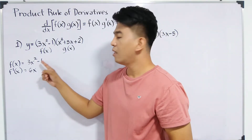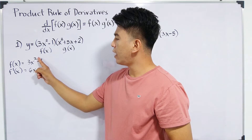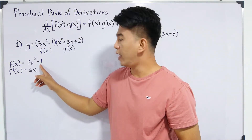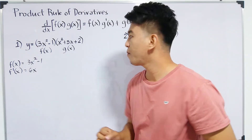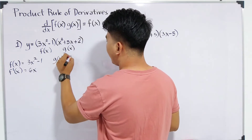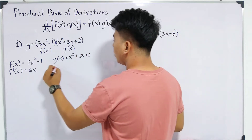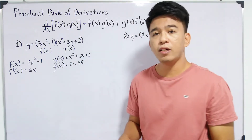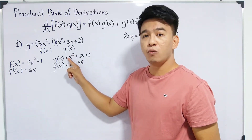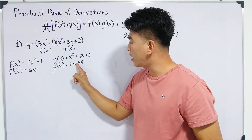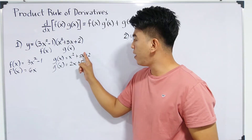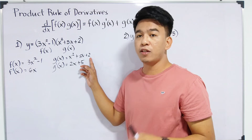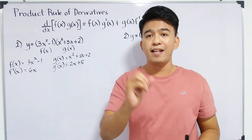How did we get 6x? Using the power rule — the exponent 2 multiplied by the coefficient 3 gives 6, and then the exponent is subtracted by 1, making it 1. And for the derivative of the constant negative 1, that is 0. Next, for g of x, we have x squared plus 5x plus 2, and g prime of x is simply 2x plus 5. The exponent 2 times the coefficient 1 gives 2, and the exponent becomes 1. For the derivative of 5x, 1 times 5 is 5, and the exponent becomes 0 so the variable disappears. The derivative of the constant 2 is 0.